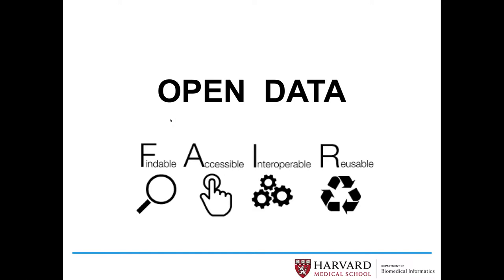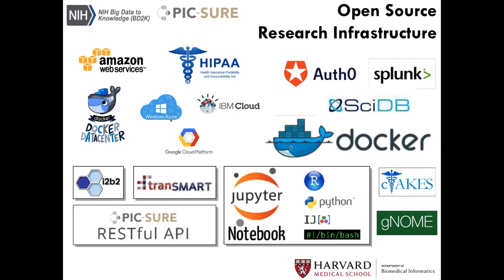The whole purpose here is not to create yet another API or database — it's to have something that is useful and actionable for biomedical research today. So our driving force was to make sure this could be useful straight away. In 2017, it has to respect the FAIR principles: Findable, Accessible, Interoperable, and Reusable. We use different stacks of open source research infrastructure.